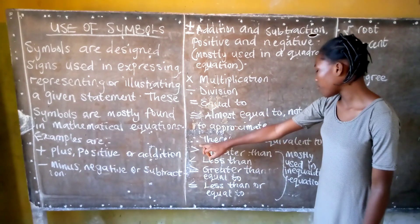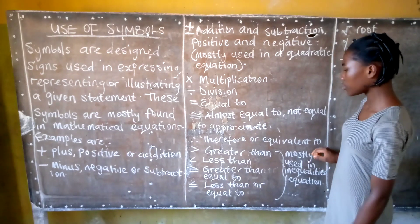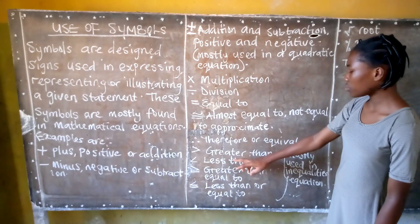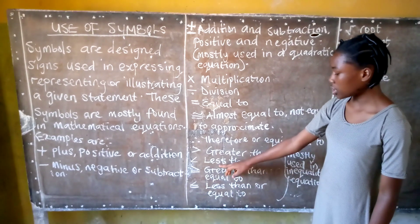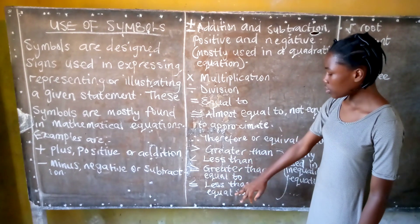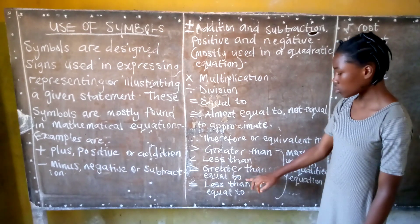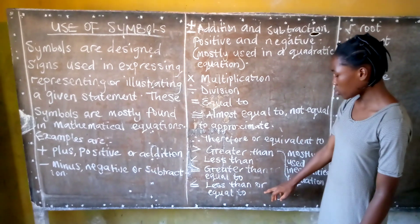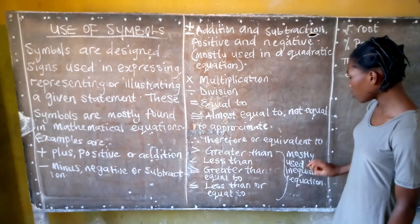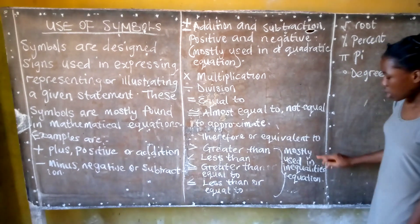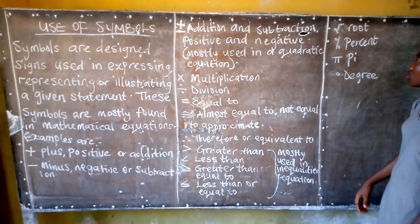We have the therefore, or equivalent to sign. We have the greater than sign, the less than sign, the greater than or equal to sign, the less than or equal to sign. And all these signs are mostly used in an inequality equation.